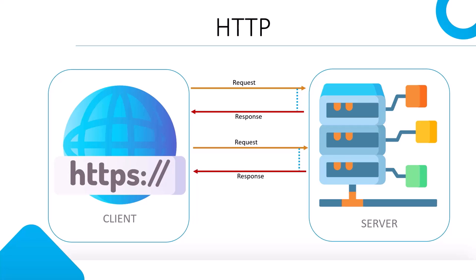The client always initiates a request and the server responds — that is a typical HTTP request. When working with SignalR, the client does not need to initiate a request. Whenever the server has new data, it notifies the client that new data is available. That is the limitation of HTTP. In SignalR, the server needs to notify clients whenever new data is updated. It is basically a two-way or open connection — the connection does not close, so the server can send additional data using the existing connection.